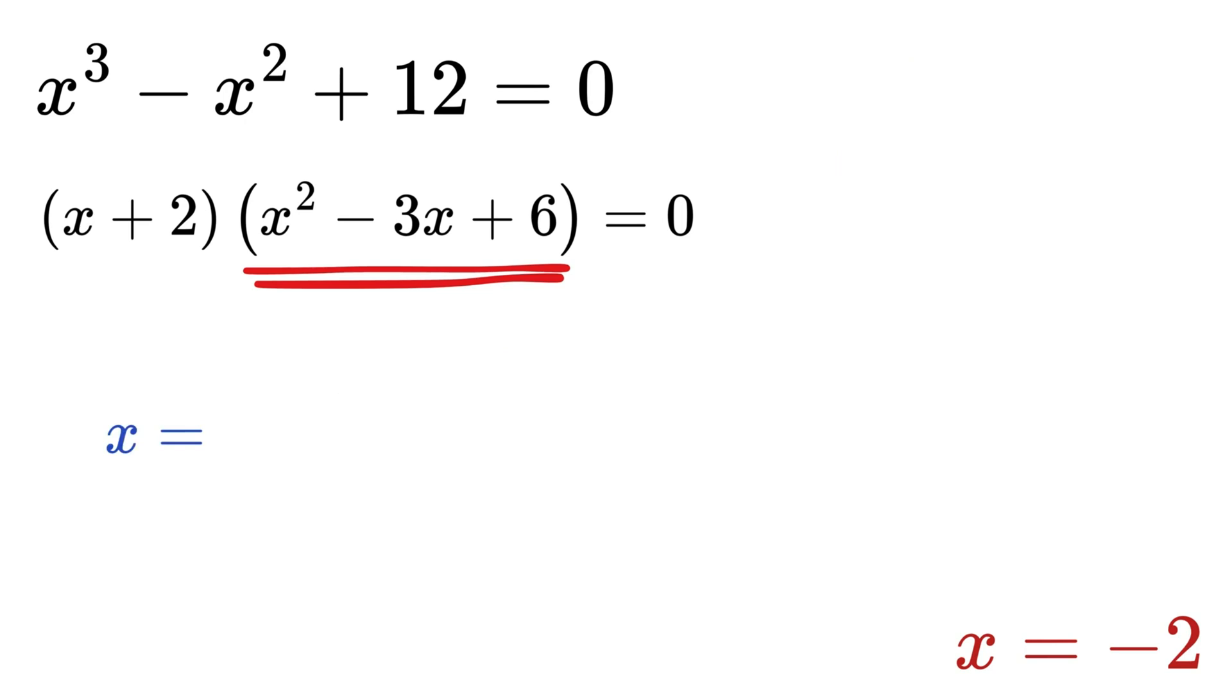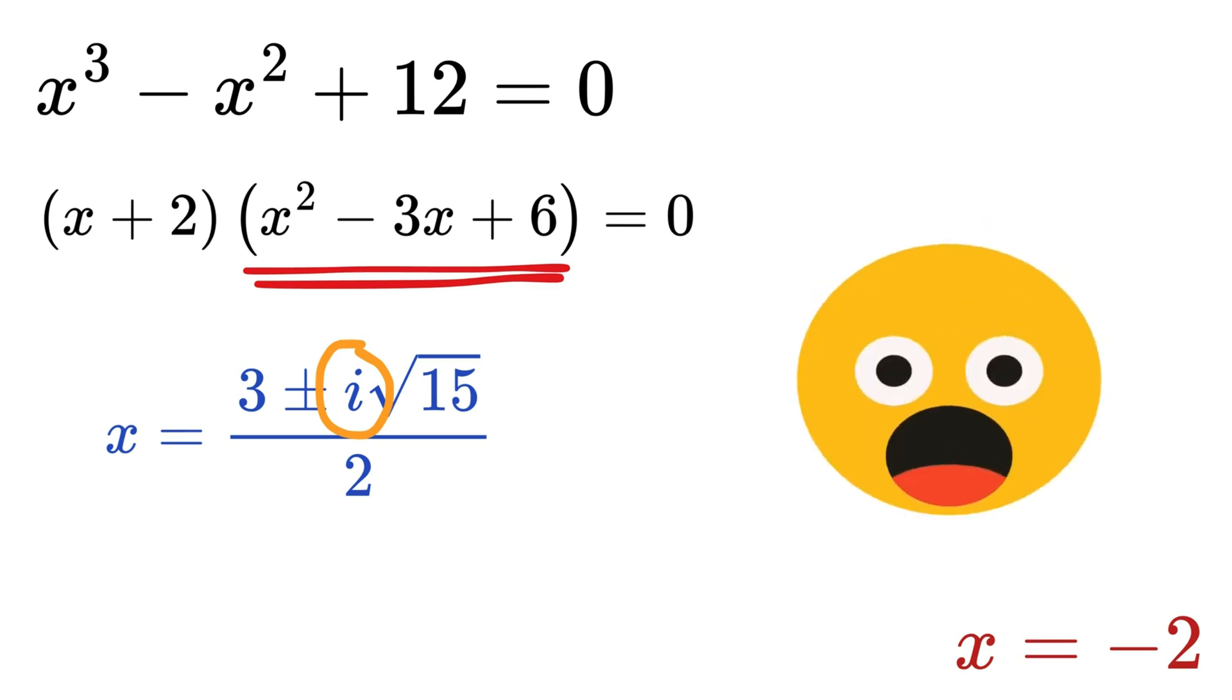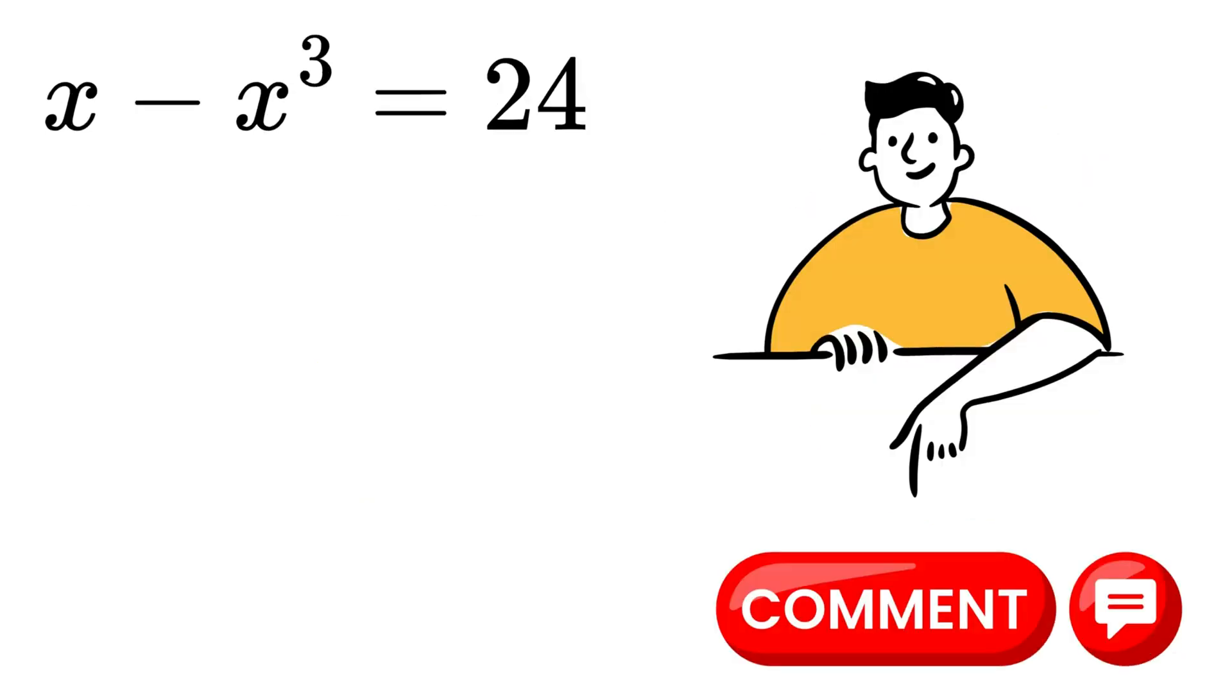We get x equals 3 plus or minus the i times the square root of 15 upon 2. See this i part. That means we have a complex root, where i equals square root of negative 1. That was amazing, wasn't it? Now, let me know in the comments all three values of x for this equation. So good!